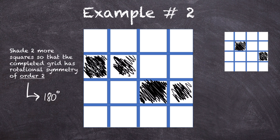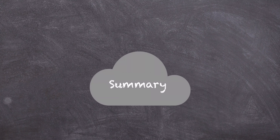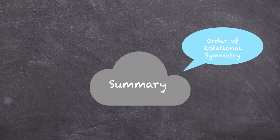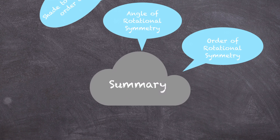I hope all the questions and examples are clear. To summarize: we covered how to find the order of rotational symmetry, how to calculate the angle of rotational symmetry, and how to shade squares to achieve a given order of rotational symmetry for an existing shape. That's all for this video lesson. I hope everything is crystal clear. I'll see you in the next video. Until then, take care of yourself. Allah Hafiz.